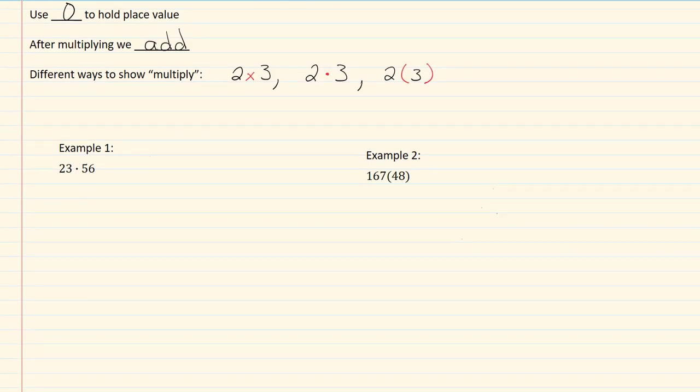Let's take a look at our examples. Here we have the dot signifying multiplication. We have 23 times 56. I need to rewrite them in a vertical manner to multiply.